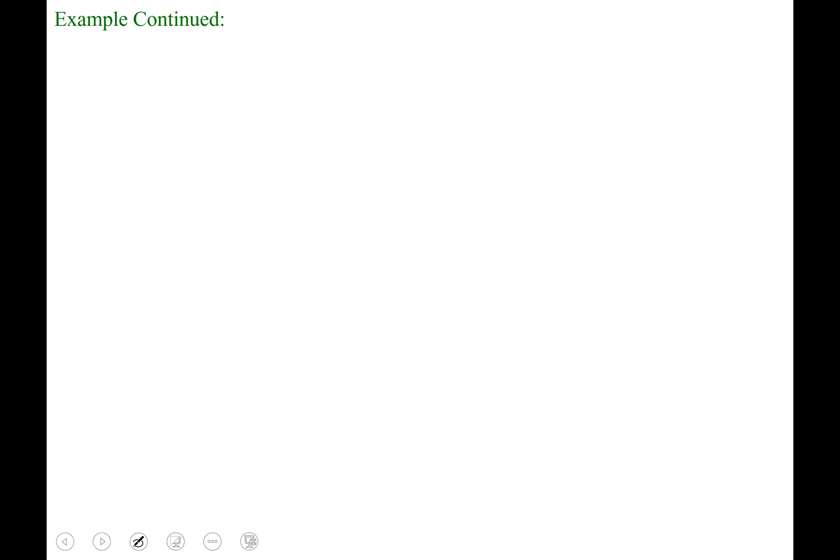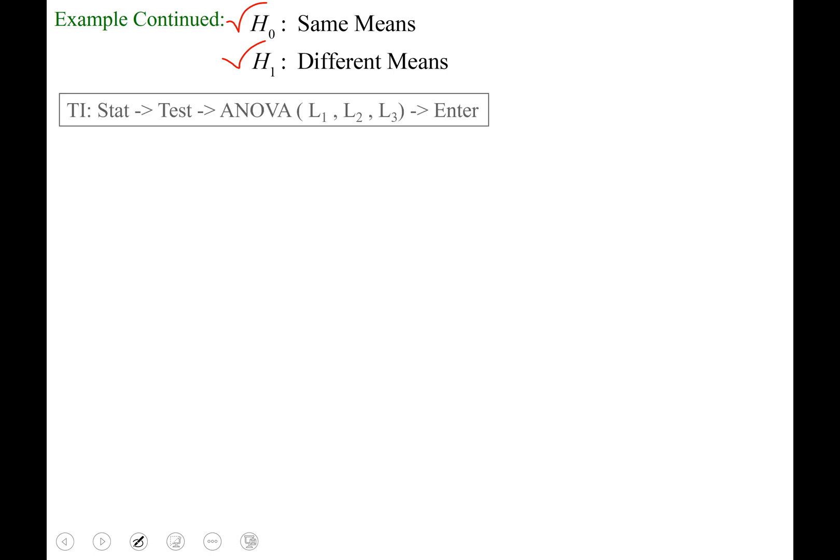Welcome back. You should have your data into list one, list two, and list three. You set up your null hypothesis saying that the means are equal. Alternative hypothesis saying that at least one of the means is different. And we are going to run the test of ANOVA now.